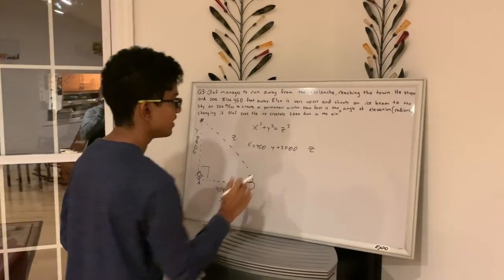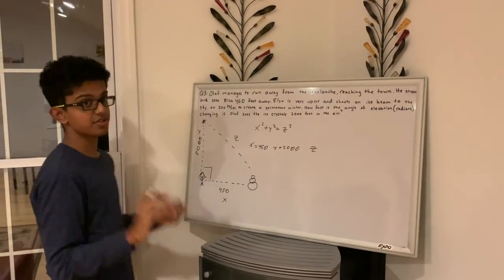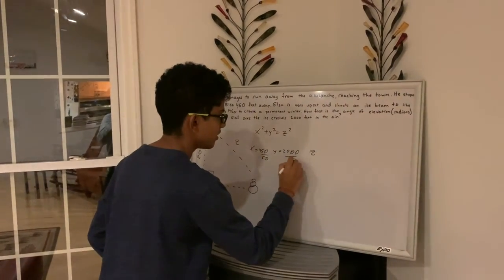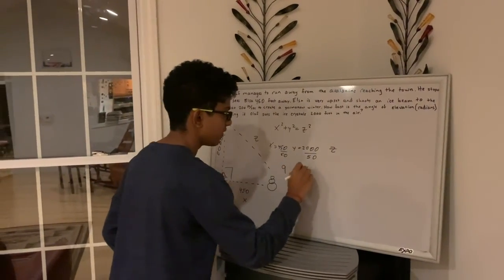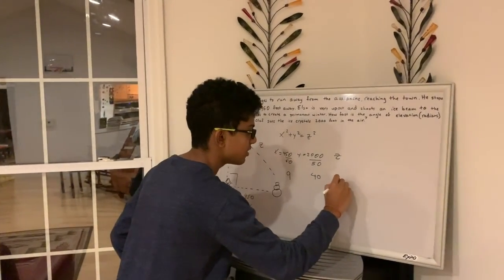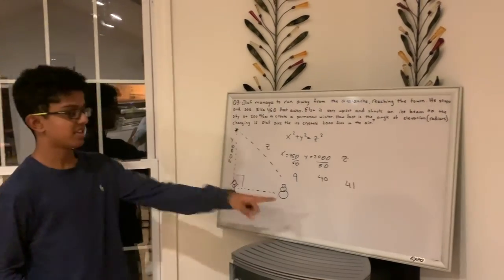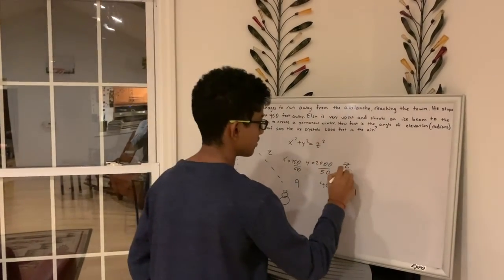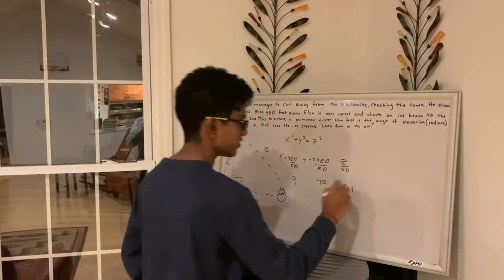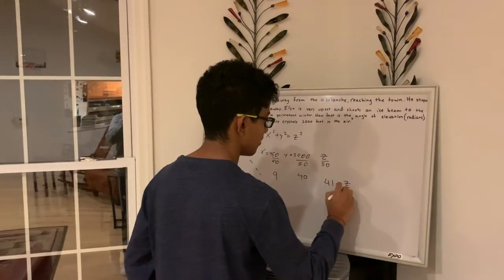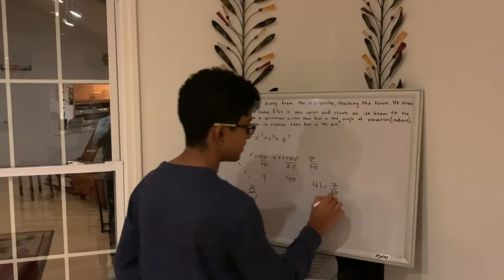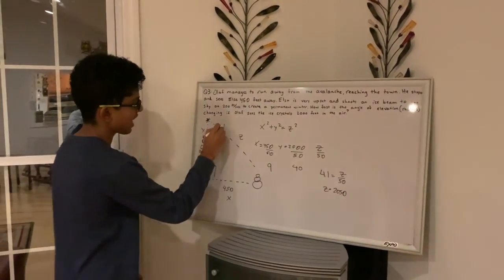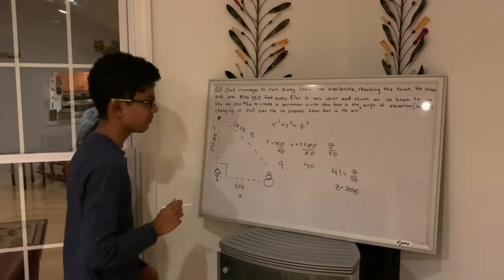Now what you might not see here is that this is a Pythagorean triple. I know it's pretty surprising. You just divide this by 50, and you get 9 and 40. So 9, 40, and 41. That is a Pythagorean triple right there. So you divide x and y by 50, you have to also divide z by 50. So 41 equals z over 50. That means z equals 50 times 41, which is 2050.